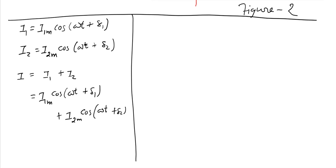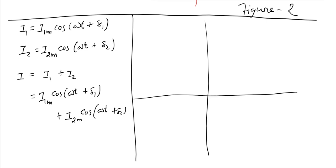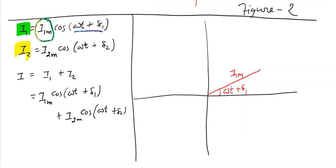Now let us see how to add i1 and i2 using phasors. You have to consider two phasors. First, take the phasor of i1: take a vector whose length is I1m and plot it at the angle ωt + δ1 — let's call this vector I1m. On top of that, consider the second phasor of i2: a vector of length I2m placed at its angle, drawn head-to-tail on I1m.